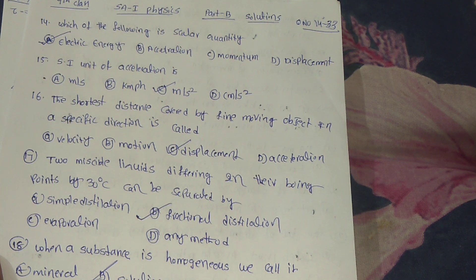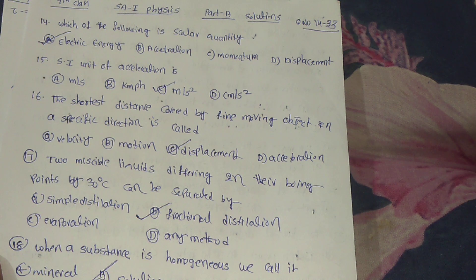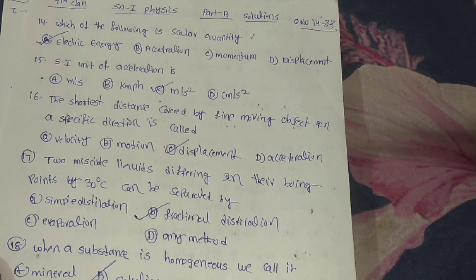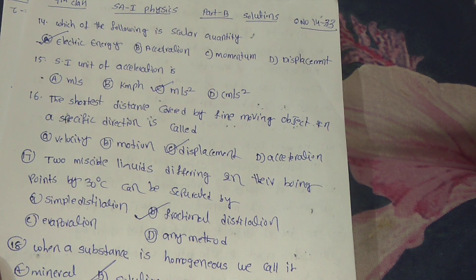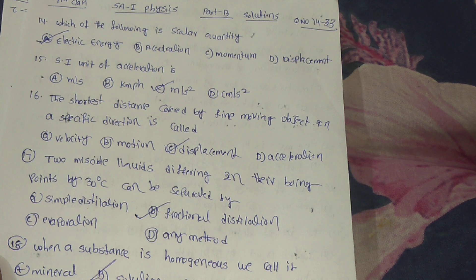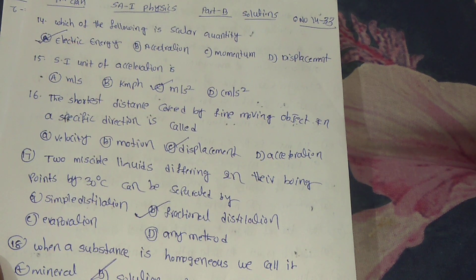Next, 16th one: the shortest distance covered by a moving object in a specific direction is called? Answer is option C, displacement.